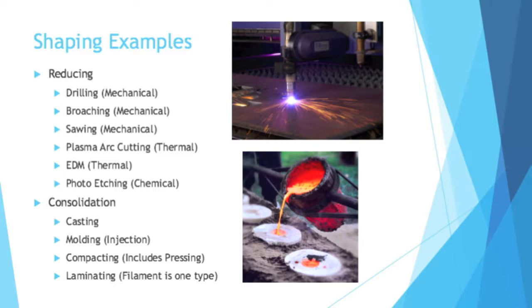There's plasma arc cutting, which is thermal and uses very high-intensity heat to cut through a material. There's EDM — not the music, but electric discharge machining — which, although it uses electricity, is thermal, using heat to cut through something. Then there is photo etching, which can be used to create images by removing material. All those examples involve reducing — taking out some material.